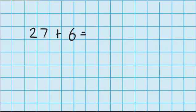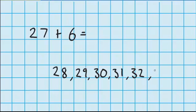So I'm thinking in my head that I'm going to be starting at 27 and counting up six numbers. So I know the next number after 27 is 28, 29, 30, 31, 32, 33.